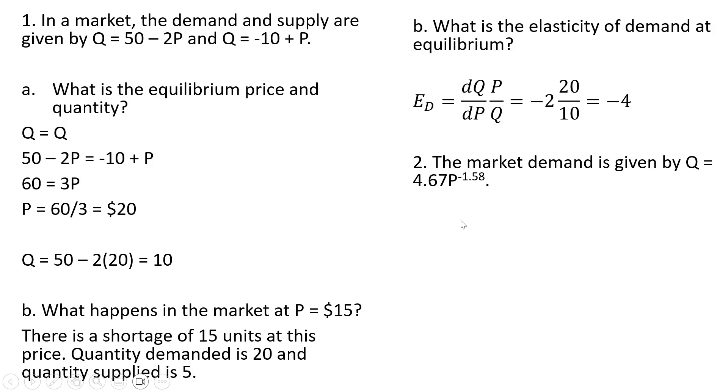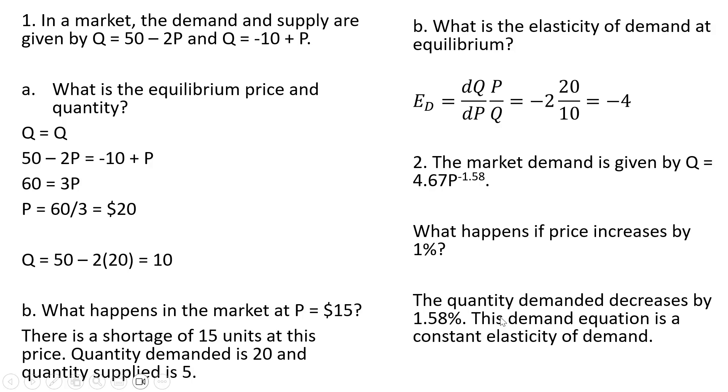Question 2. The market demand is given by Q equals the following. This is a nonlinear demand. What happens if price increases by 1%? The quantity demanded is expected to decrease by 1.58%, which is just the exponent on the price term. This demand equation is a constant elasticity of demand.